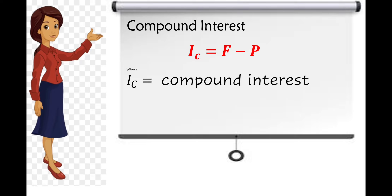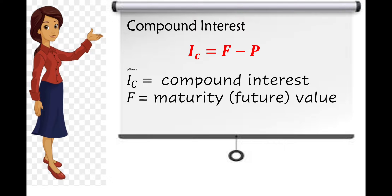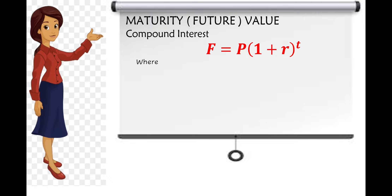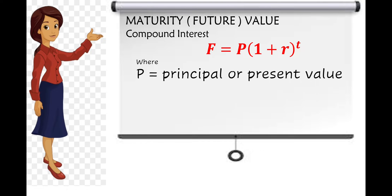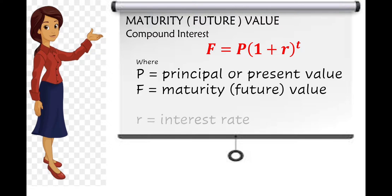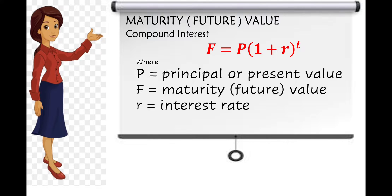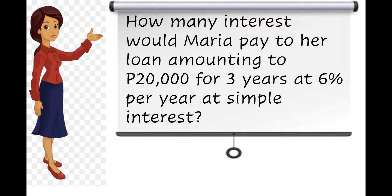For compound interest, we have I sub C is equal to F minus P, wherein I sub C is compound interest, F is the maturity or future value, and P is the principal. To find the future value of compound interest, we have F is equal to P times the quantity one plus R raised to T, where P is the principal or present value, F is the maturity or future value, R is the interest rate, and T is the term or time in years.